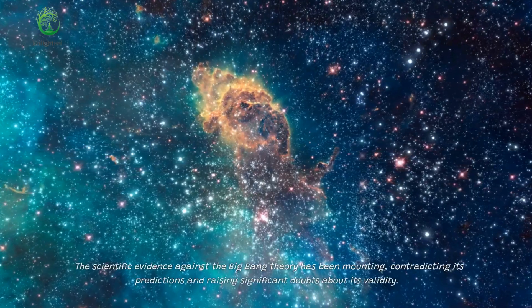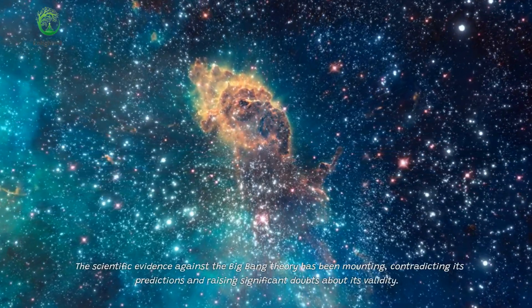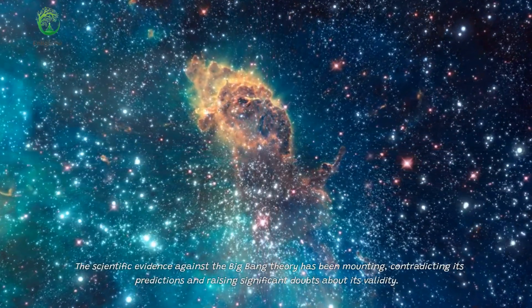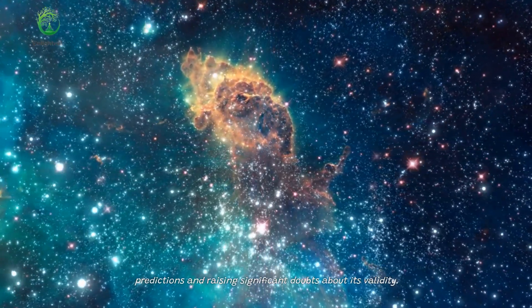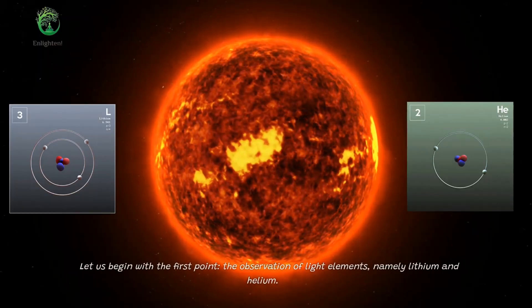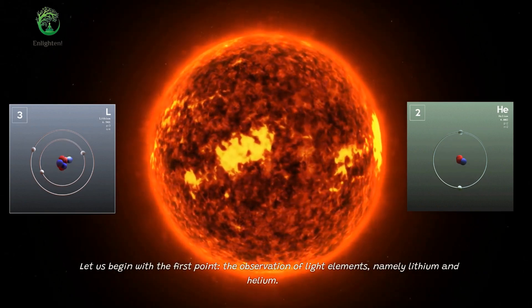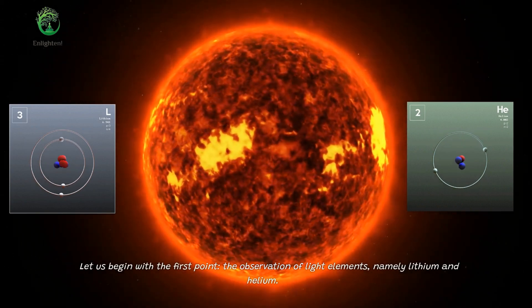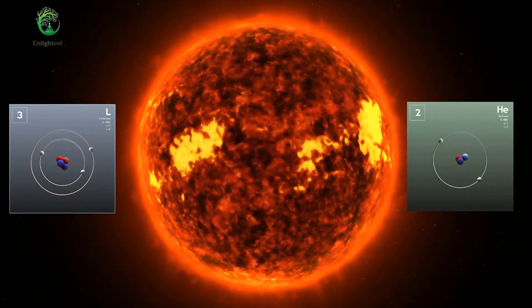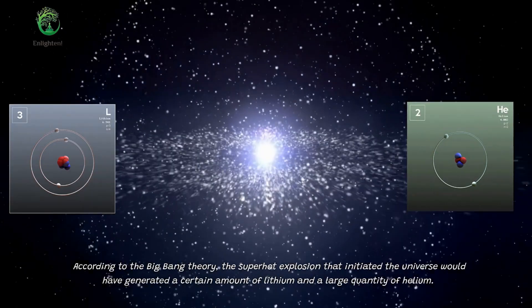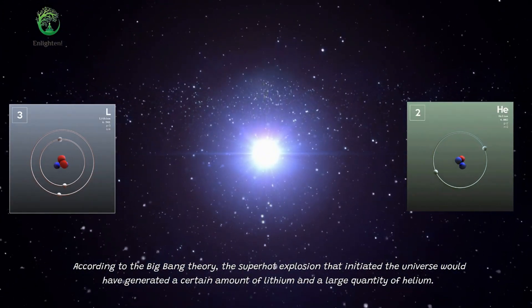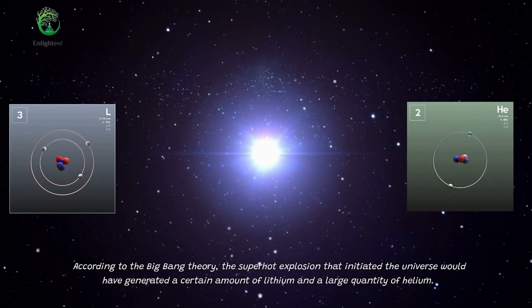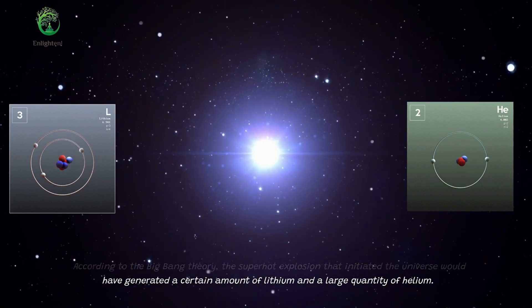The scientific evidence against the Big Bang Theory has been mounting, contradicting its predictions and raising significant doubts about its validity. Let us begin with the first point, the observation of light elements, namely lithium and helium. According to the Big Bang Theory, the superhot explosion that initiated the universe would have generated a certain amount of lithium and a large quantity of helium.